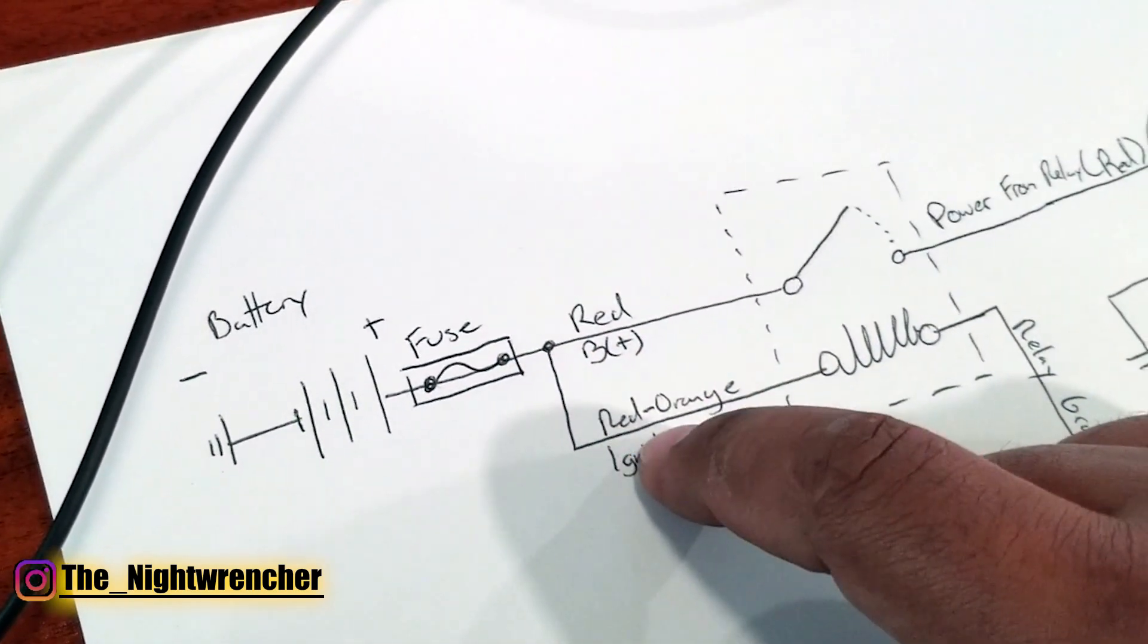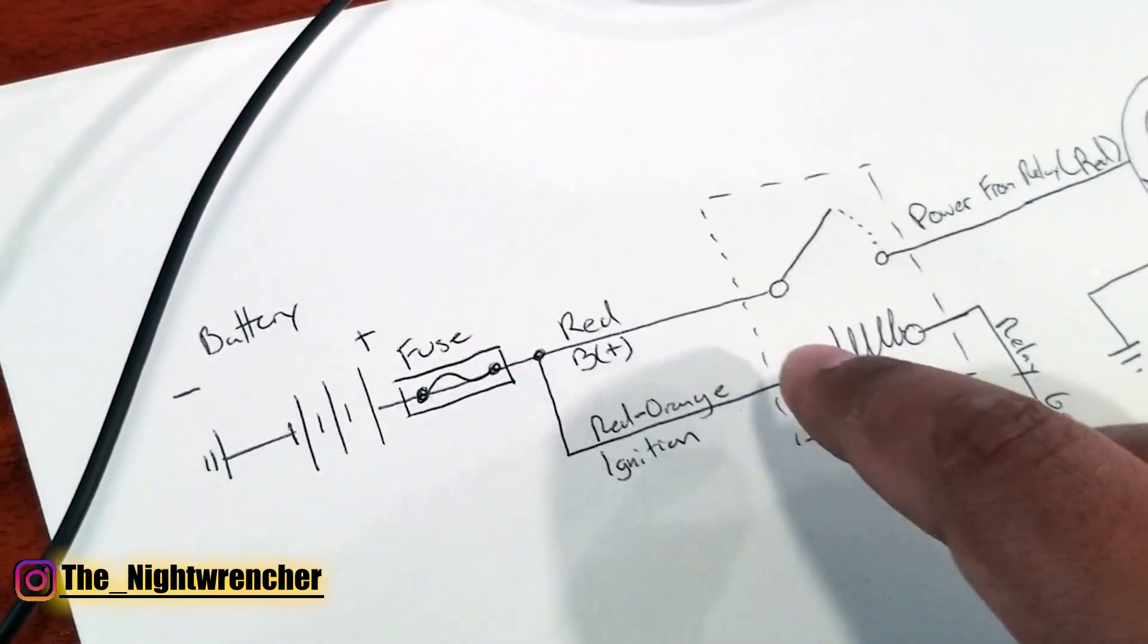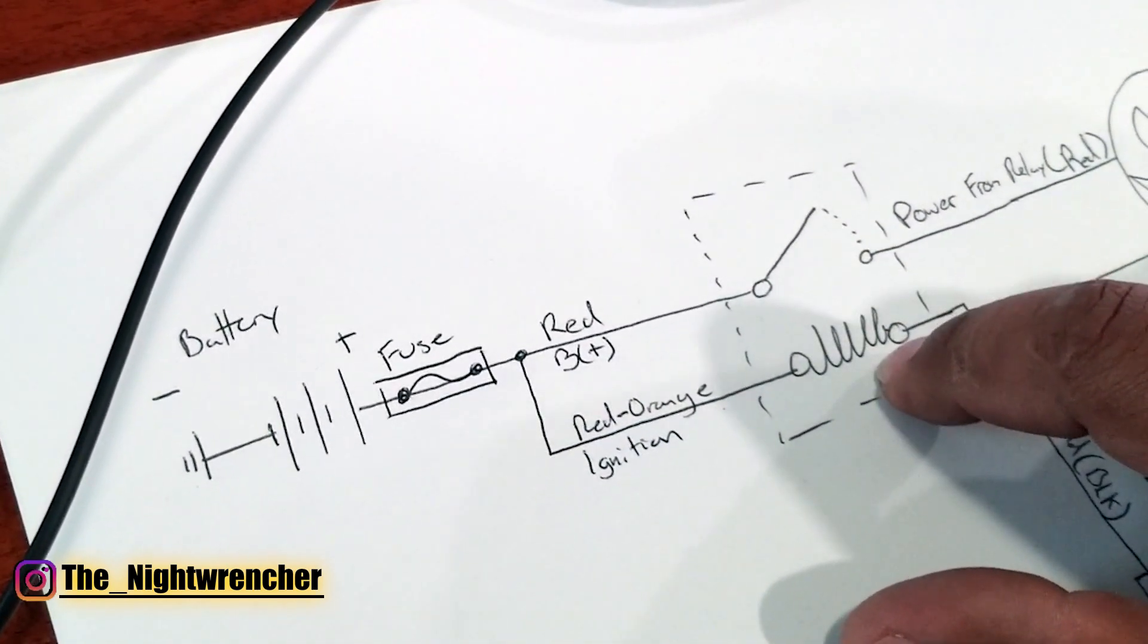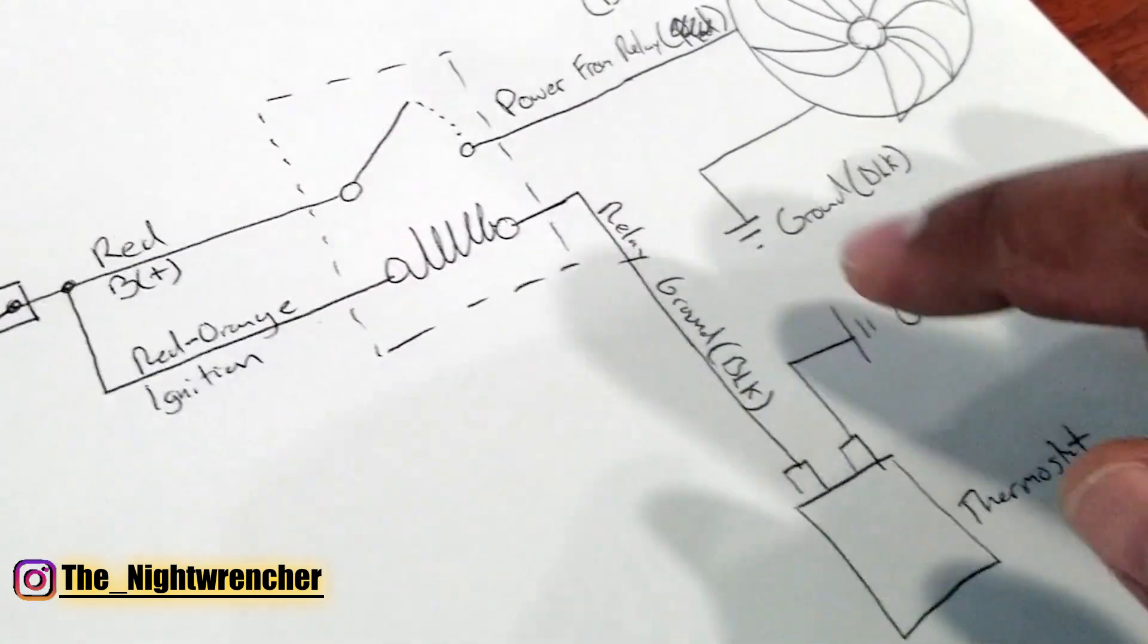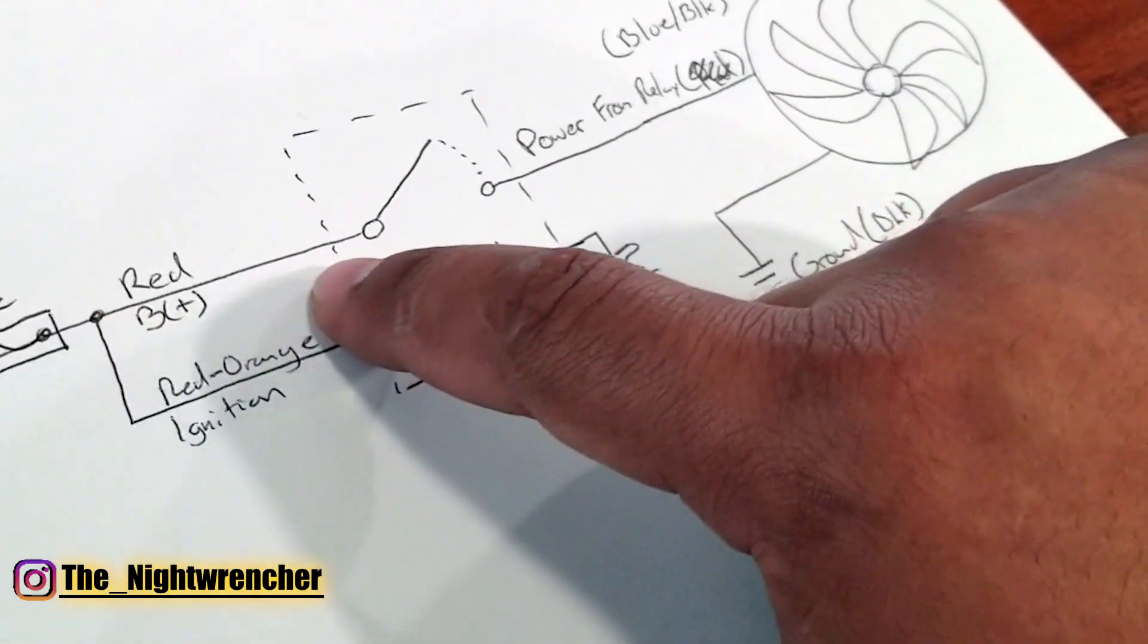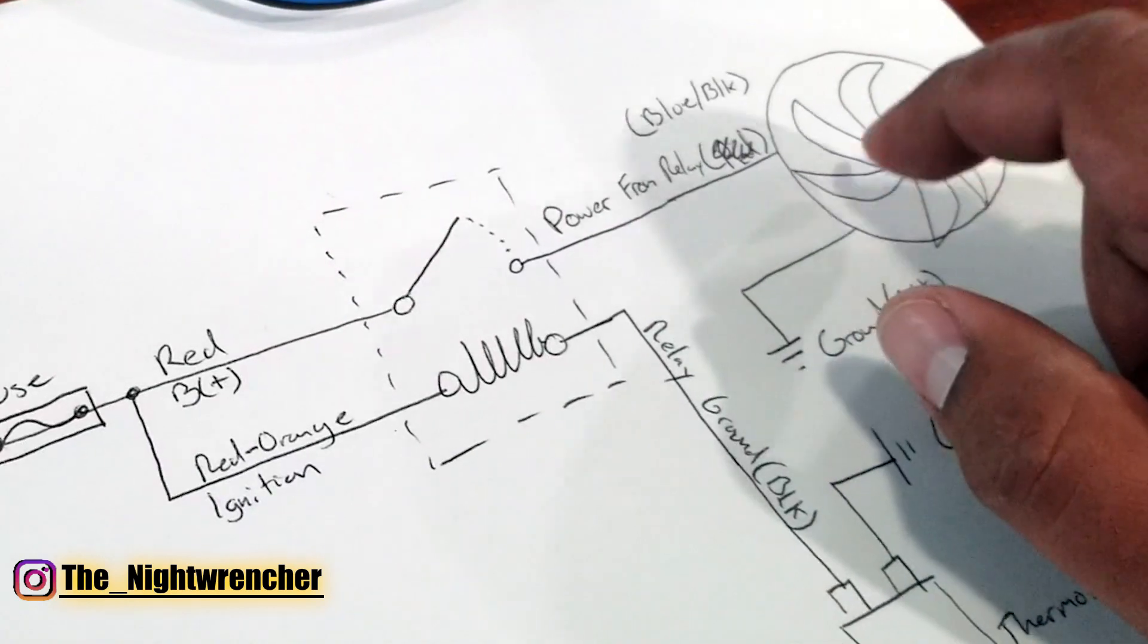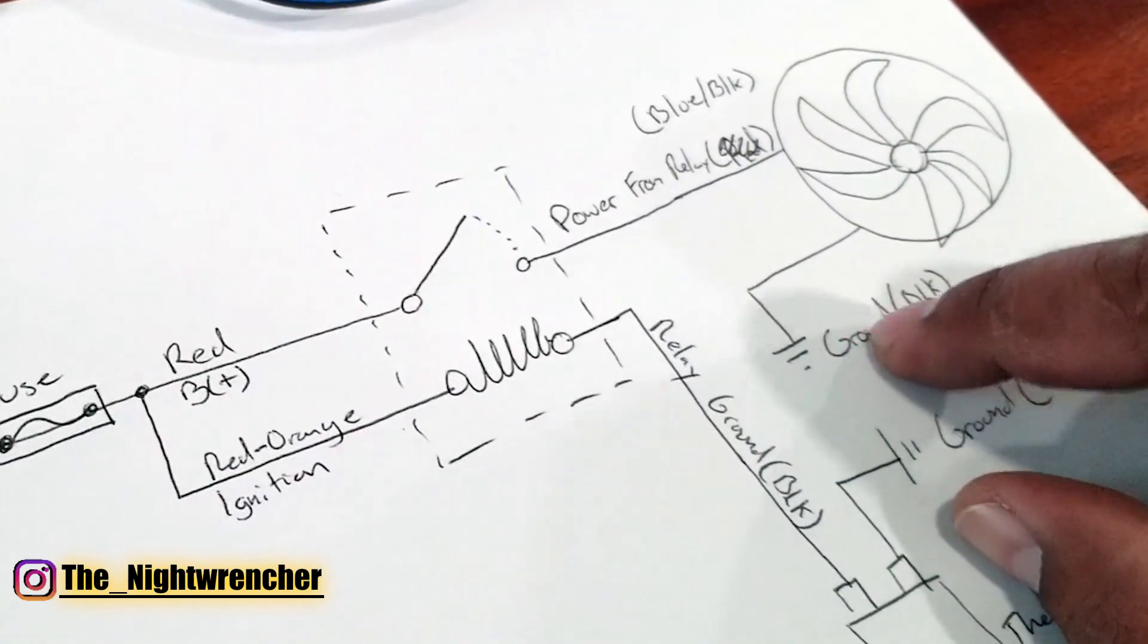That fuse goes ahead and feeds the heavy side of the relay. You also have a red orange wire that's supposed to go from an ignition source and that's supposed to feed the coil side of the wire. On the back side of the power side of the relay, you're going to close the circuit when the relay is energized. The relay is energized when the thermostat closes the circuit and applies the ground to the relay. When the relay is grounded the switch is going to close, transfer power from this red wire, go through the switch, and leave through this blue and black wire which goes to the fan itself.